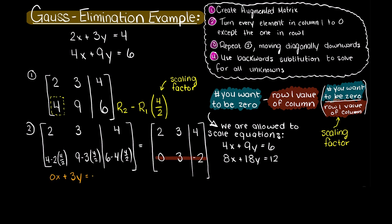Firstly, our y variable is readily solvable as 3y equals minus 2 can be solved by dividing both sides of our equation by 3. Therefore, y is equal to minus 2 over 3.